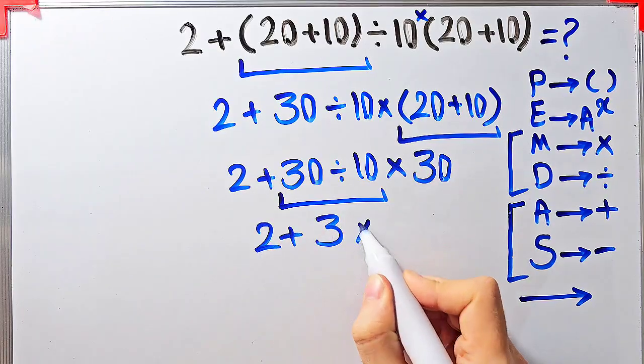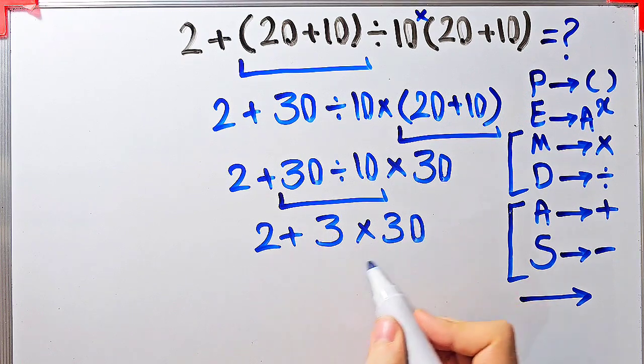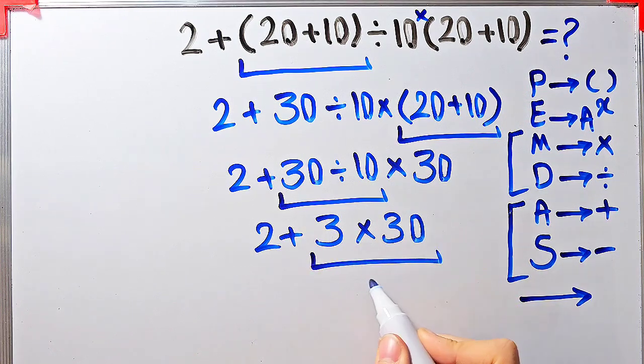Now we have 2 plus 3, then times 30. We have addition and multiplication. First we simplify this multiplication. 3 times 30 equals 90.